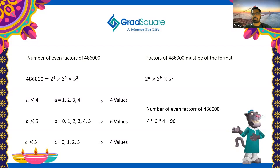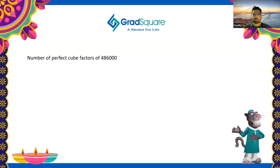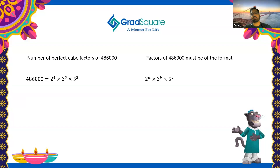We previously found the total number of factors of 486,000 to be 120, and now the number of even factors is 96. So the number of odd factors is 120 − 96 = 24. Now let's do one more question of the same nature: finding the perfect cube factors of 486,000.